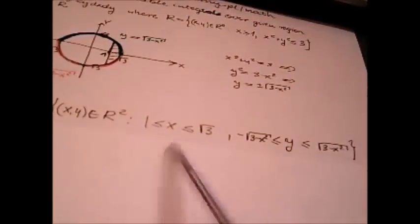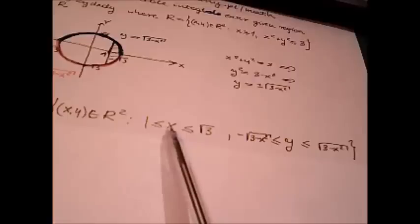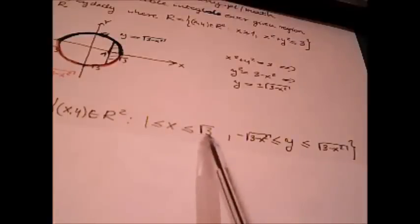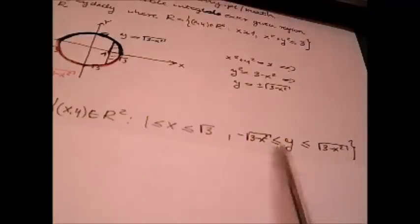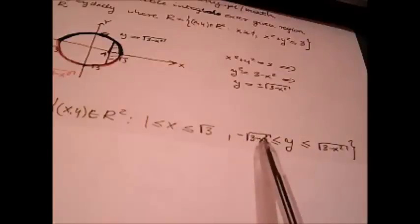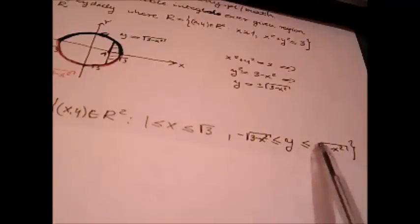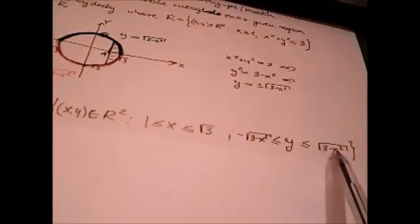Now we have overview of region. Range of x: 1 and square root of 3. And range of y: minus square root of 3 minus x squared and plus square root of 3 minus x squared.